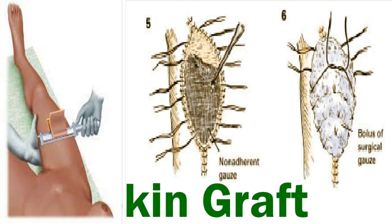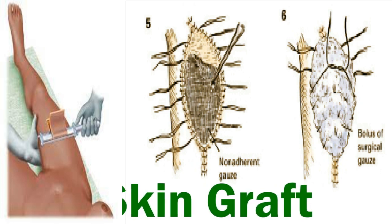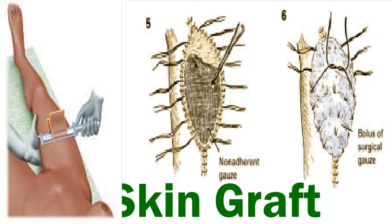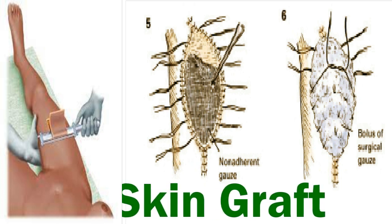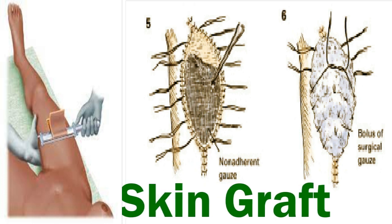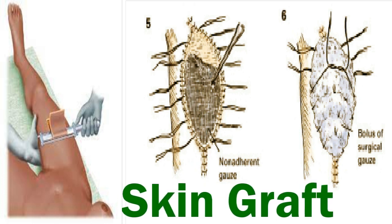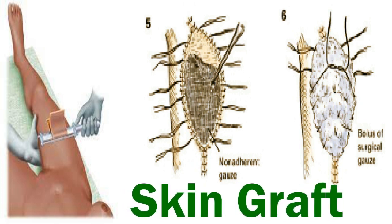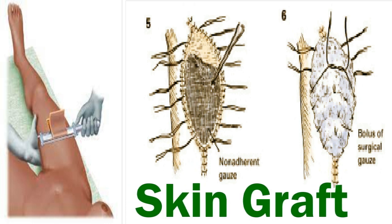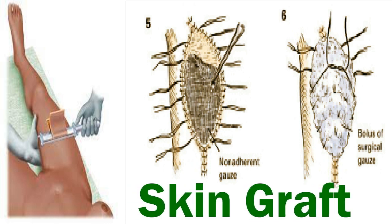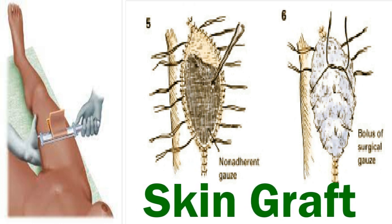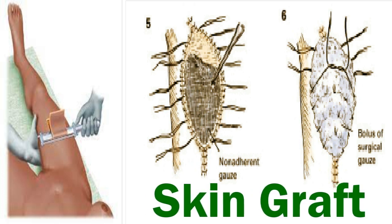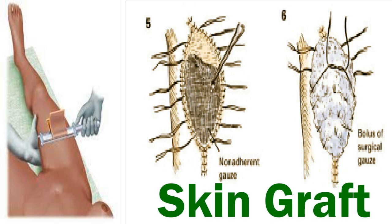If a bolster dressing is required to hold the graft in place, nonabsorbable sutures are placed around the periphery with the tails left long. One layer of nonadherent gauze is placed over the graft, and the area is then covered with fluffed gauze. The long bolster sutures are then tied to each other firmly without being too tight. Alternatively, a negative pressure dressing placed on low continuous suction can be placed over the graft, with a nonadherent oil-emulsion gauze providing a barrier layer between the graft and the dressing sponge.